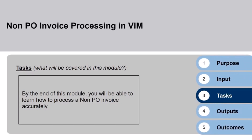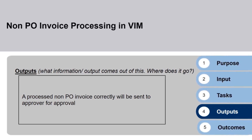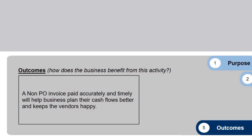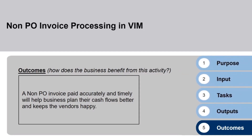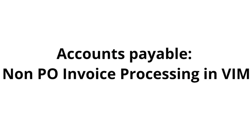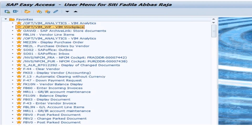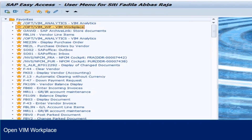By the end of this module, you will be able to learn how to process a non-PO invoice accurately. A processed non-PO invoice correctly will be sent to approver for approval. A non-PO invoice paid accurately and timely will help business plan their cash flows better and keeps the vendors happy. Accounts payable, non-PO invoice processing in VIM. Open VIM Workplace. Type /OPT/VIM_WP and press enter, or user may search the transaction code in user menu.